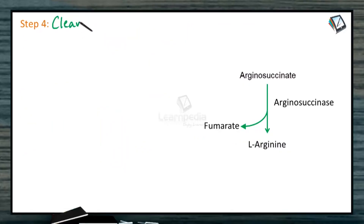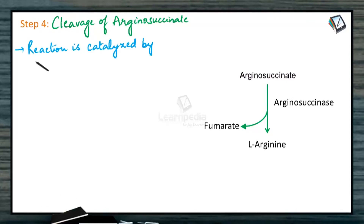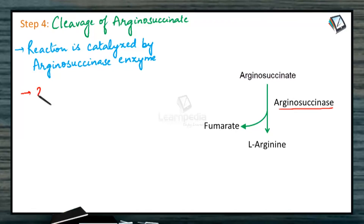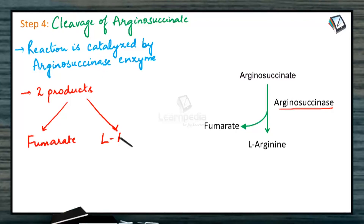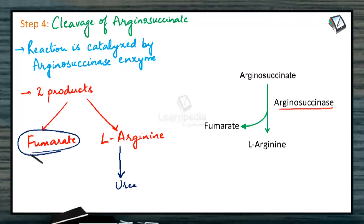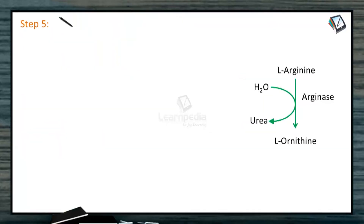Step 4: Cleavage of arginosuccinate. This reaction is catalyzed by the enzyme arginosuccinate lyase, which cleaves arginosuccinate to form two products: fumarate and L-arginine. L-arginine further continues to form urea, whereas fumarate remains as a by-product.